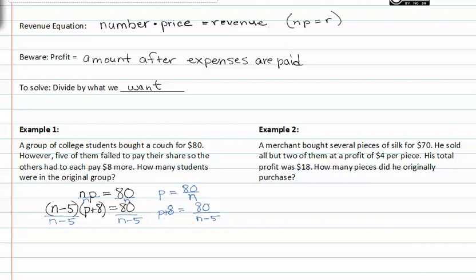This gives us p plus eight is equal to eighty divided by n minus five. I'm going to leave these both the way they are, and take this which I know is equal to p and substitute it into p for p in the second equation. This gives me eighty over n plus eight is equal to eighty over n minus five.